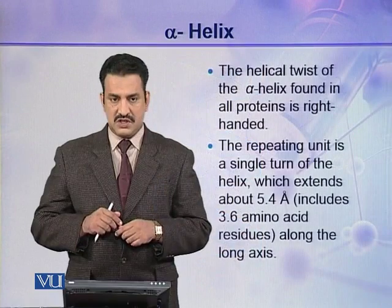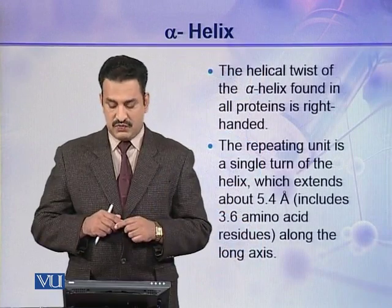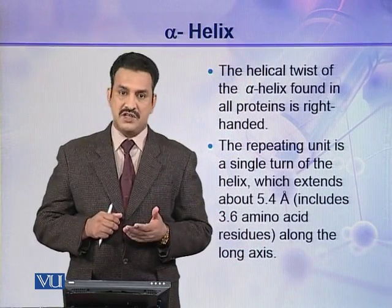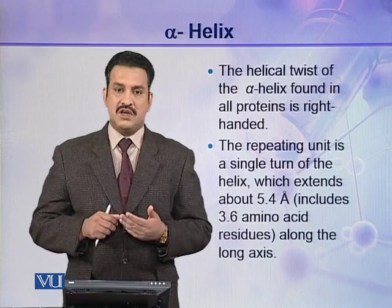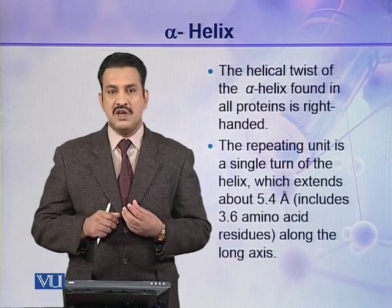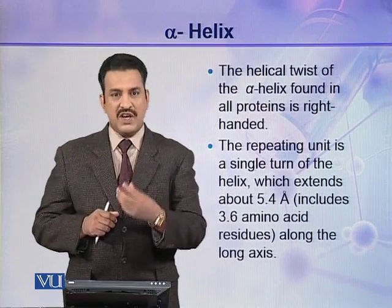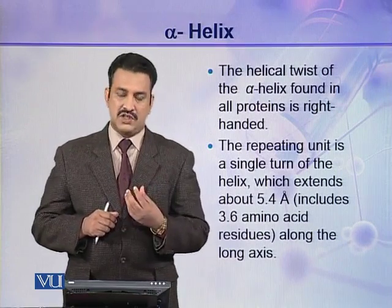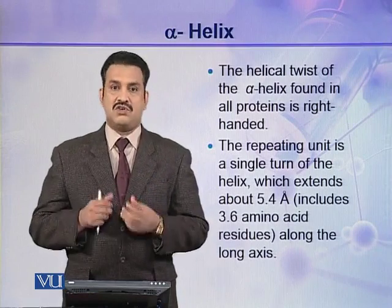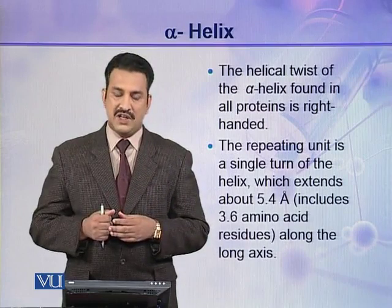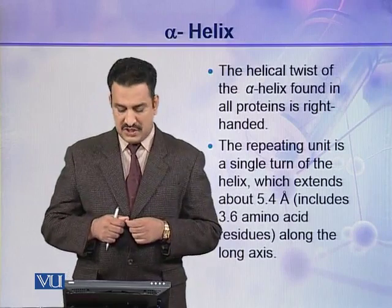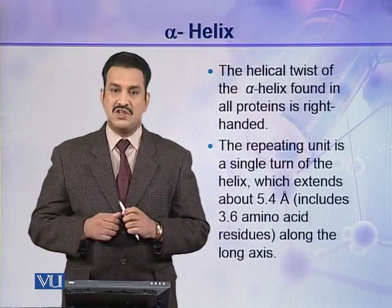The helical twist of the alpha helix found in all proteins is right-handed. When describing the direction of a helix, we cannot say either clockwise or anti-clockwise — these terms are not appropriate for helices. Instead, we say it is right-handed coiling or left-handed coiling. The alpha helix in proteins is right-handed coiling.